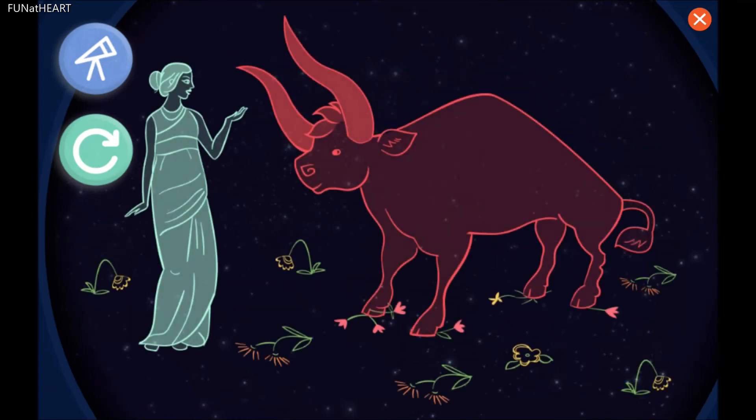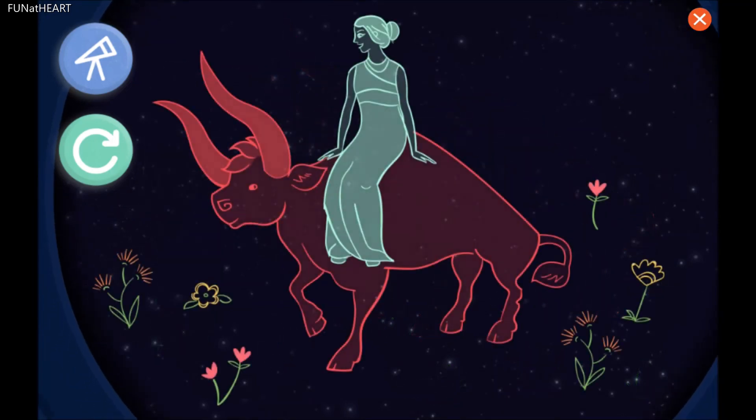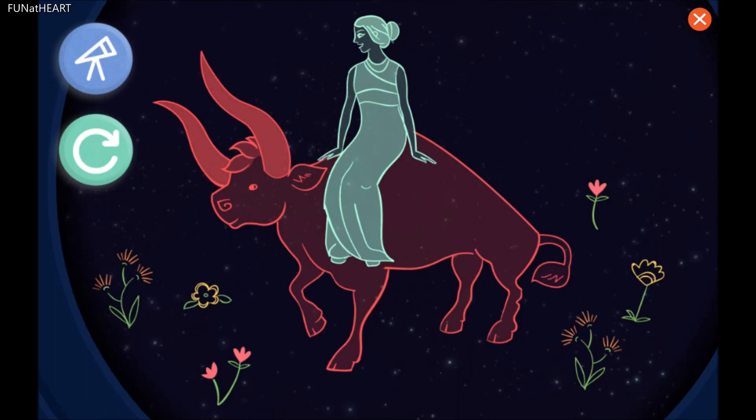Taurus apologized, and they soon became good friends. From then on, every spring, Persephone would ride on Taurus's back, and the two of them would make the flowers bloom as they walked by.